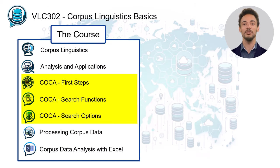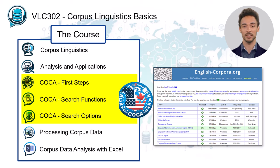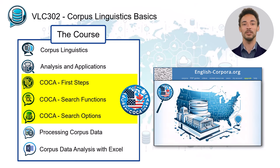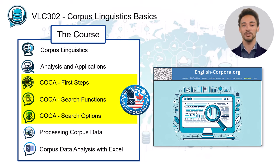Units 3 to 5 deal with the main steps of using corpora via the interface englishcorpora.org. Using the well-known Corpus of Contemporary American English, COCA, we will apply the main search functions and options available. These three units are highly practical and interactive and provide you with numerous ideas about using corpus data.